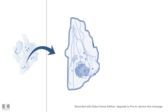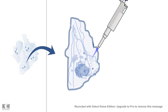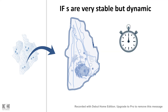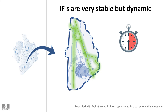Intermediate filaments give the cell stability and mechanical support, and they are very stable — resistant to detergent and high salt concentration. Yet they are very dynamic. When scientists introduced fluorescently labeled intermediate filament protein subunits inside a fibroblast, after two hours they found several intermediate filaments labeled with those fluorescent subunits. This means that intermediate filaments, though very stable, are also turning over and dynamic in nature.